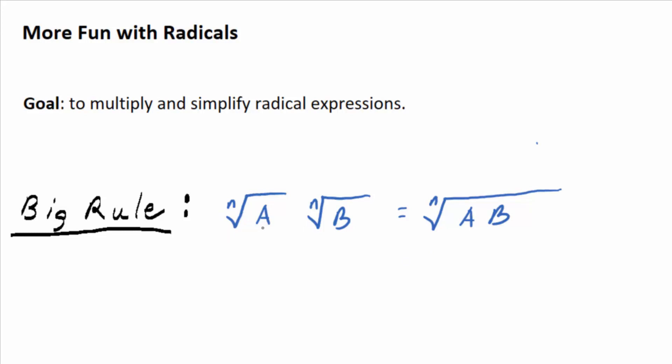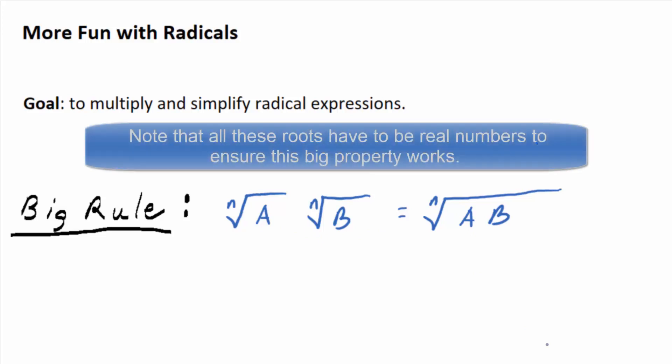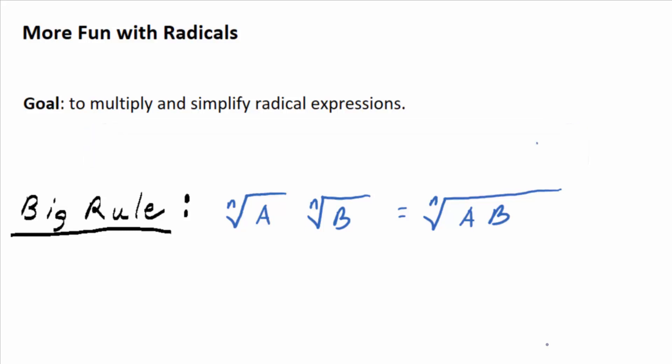In other words, the nth root of A times the nth root of B is the nth root of A times B. And you guys know the equal sign is a two-way street, right? So it works both ways.